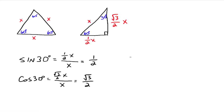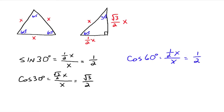What about the cosine of 60 degrees? Now we're looking at the 60 degree angle. The cosine is adjacent, so it's one half x over the hypotenuse x, which goes down to one half. So the sine of 30 degrees and the cosine of 60 degrees gave us the same value.